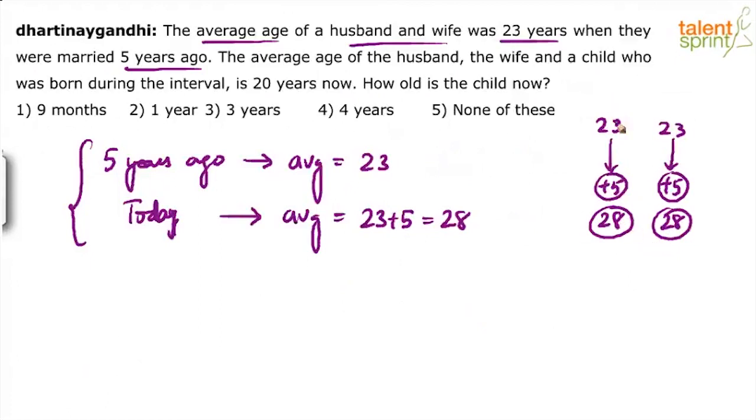Of course, both the persons need not be 28, but then equal distribution concept. So, without wasting a second, you must realize that if 5 years ago, the average was 23, today, the average is 28. But if you include their son or the child who was born in this interval of 5 years, the average is 20 years. The average age of the husband, wife, and the child who was born during this interval is 20 years now. So, how old is the child?